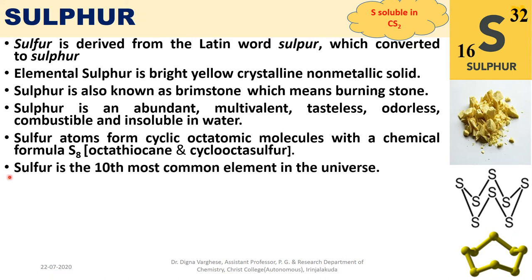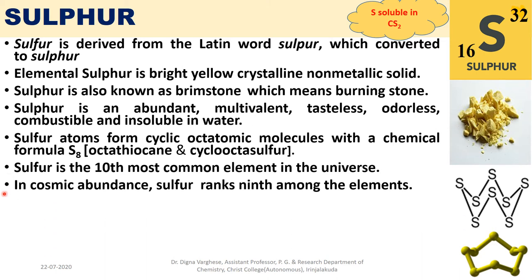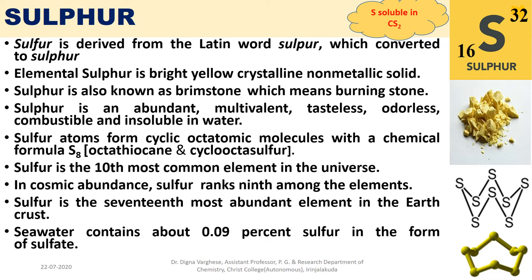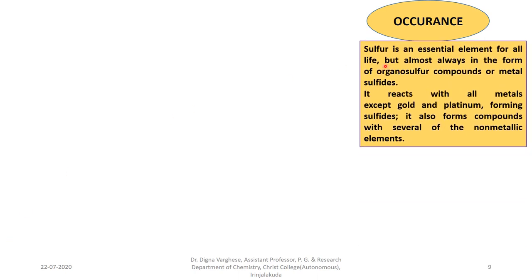Sulphur is the 10th most common element in the universe. In cosmic abundance, sulphur ranks 9th among the elements. It is the 17th most abundant element in the Earth's crust. Seawater contains about 0.09% sulphur in the form of sulfate. Sulphur is an essential element for all life, almost always in the form of organosulphur compounds or metal sulfides. It reacts with all metals except gold and platinum, forming sulfides, and also forms compounds with several non-metallic elements.